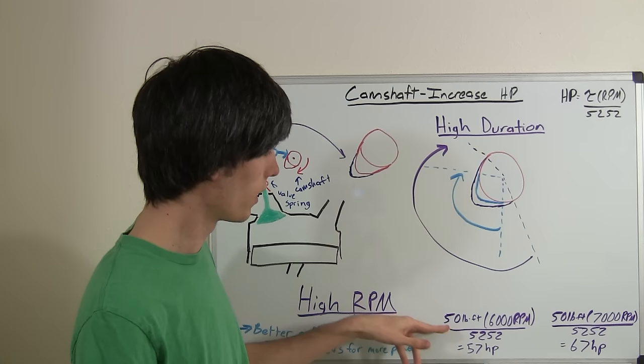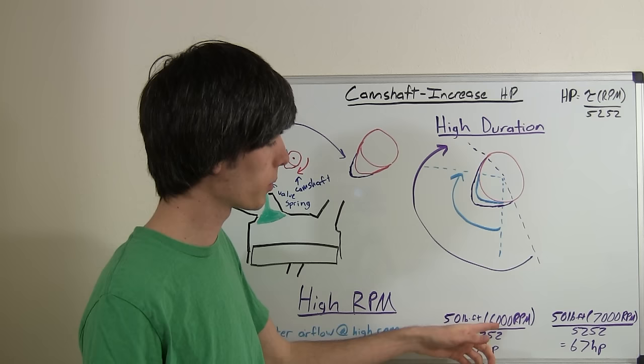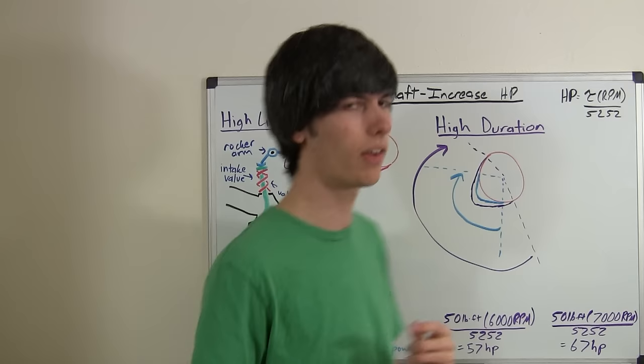then you have 50 pound-feet of torque. This is just an example, say your car makes 50 pound-feet of torque, multiply that by 6,000 divided by 5252, and your car is creating 57 horsepower at its peak.